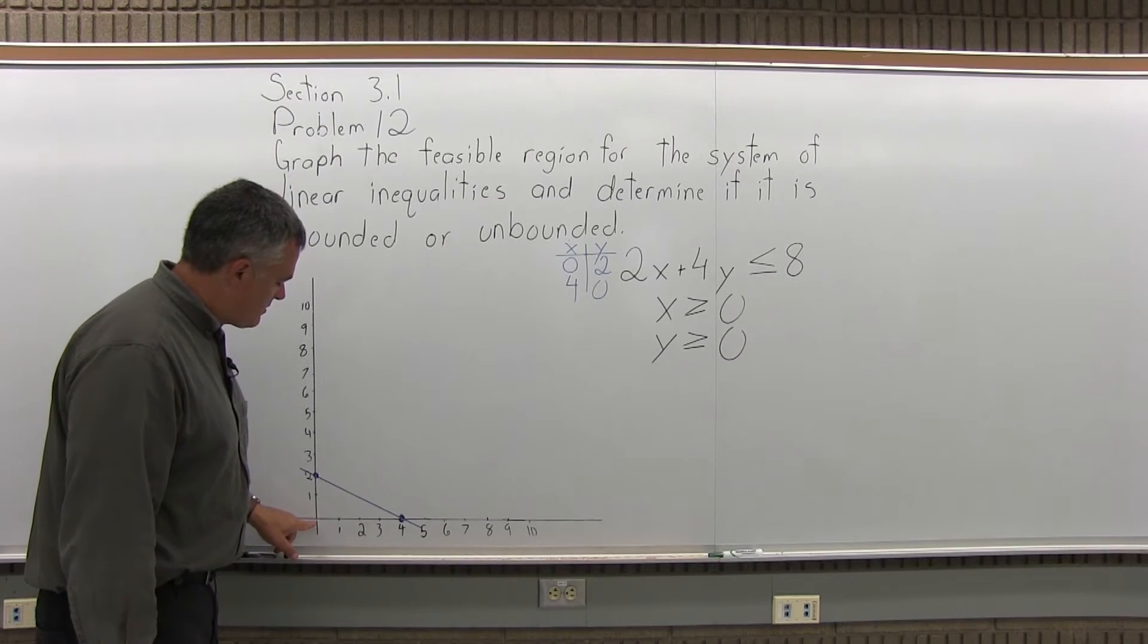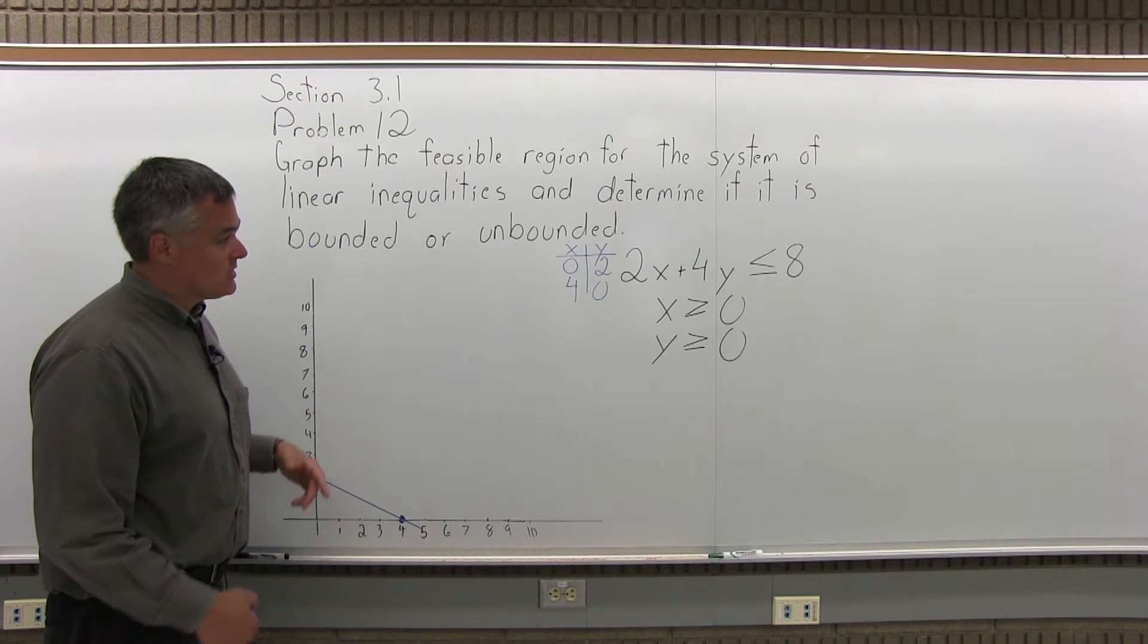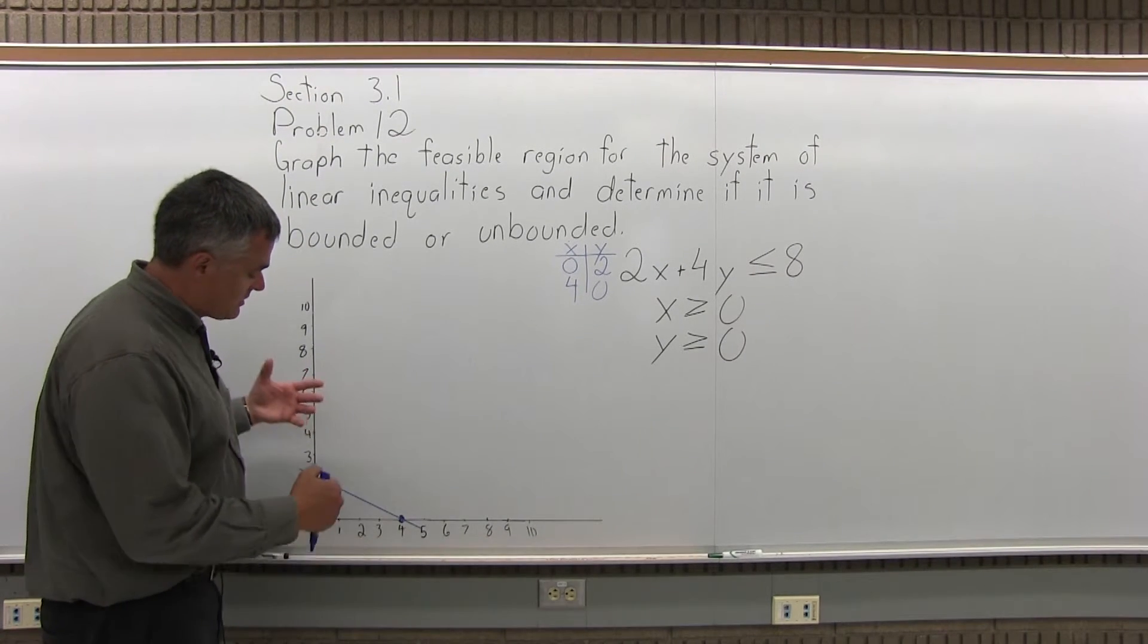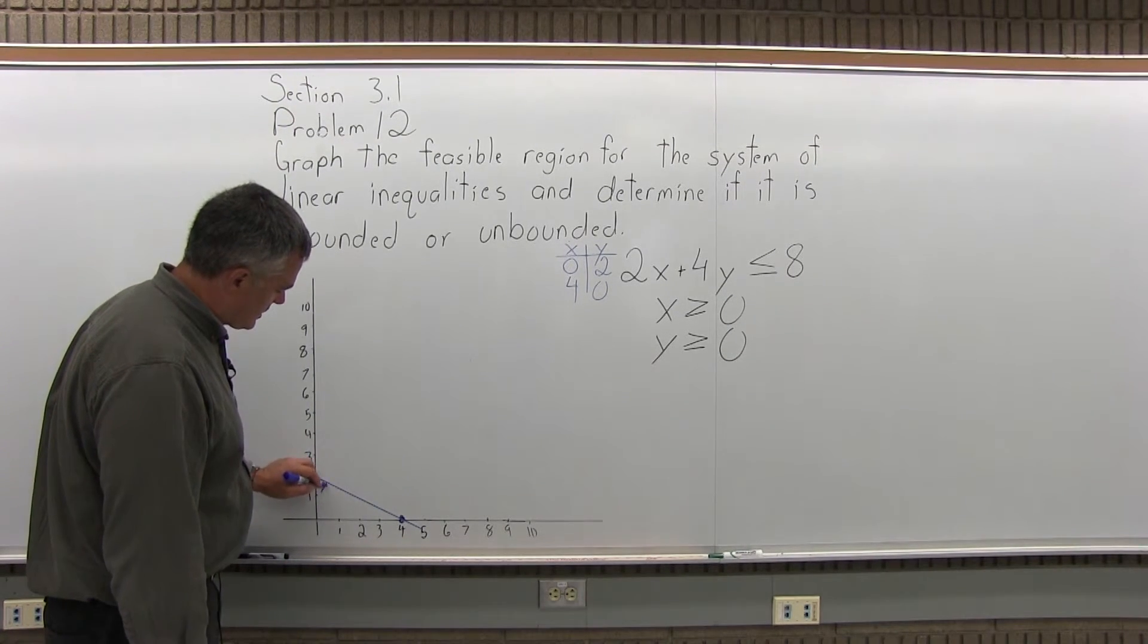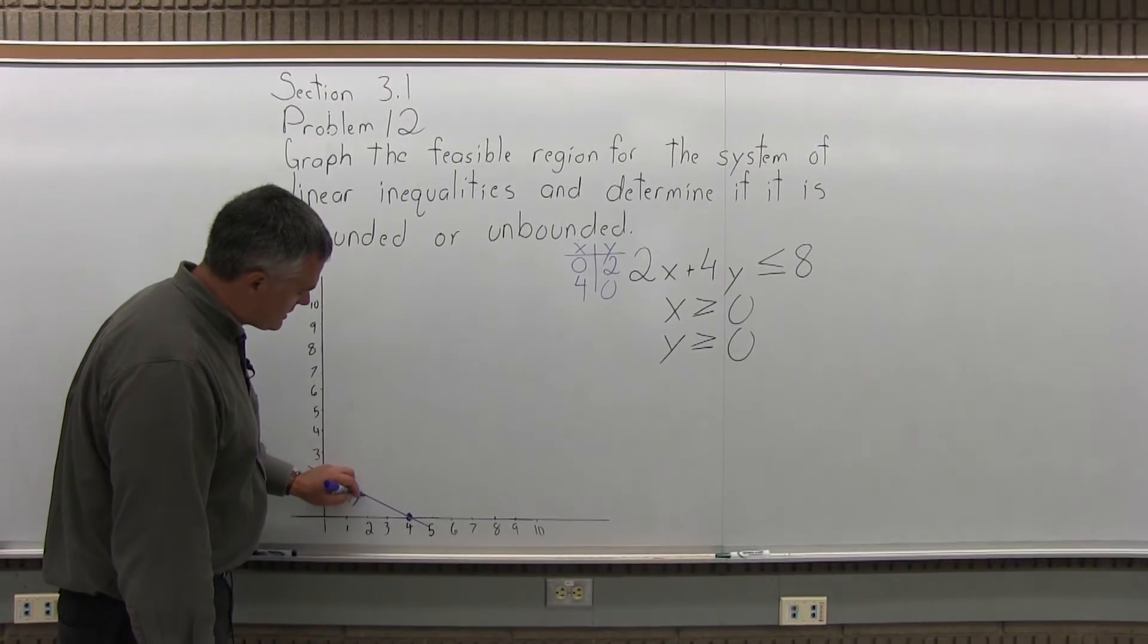So now, my test point was from the underneath side. The result I got was true, so the underneath side, the side that my test point came from, is the shaded side. So I'm going to shade everything under this line.